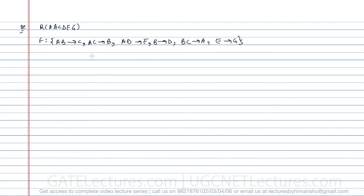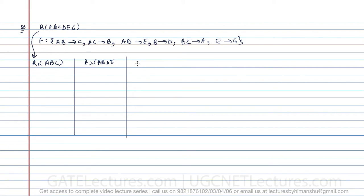These are the functional dependencies which are given. Now, they are saying we have broken this relation into three relations: R1 which has attributes A, B, C; R2 which has attributes A, B, D, E; and R3 which has the attributes E and G.